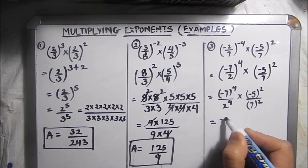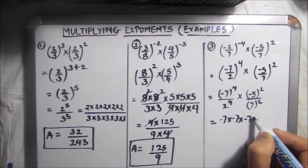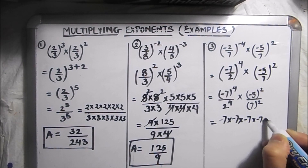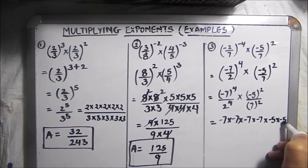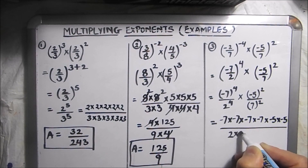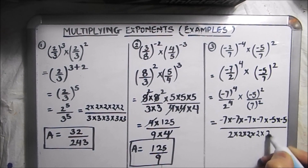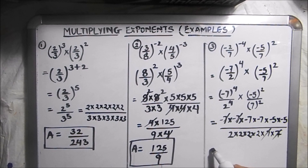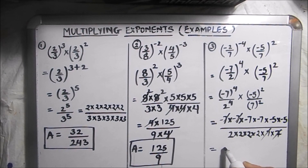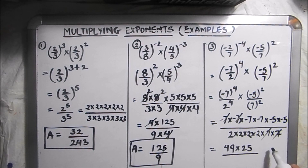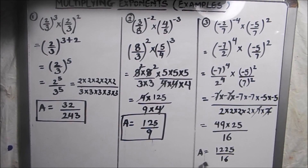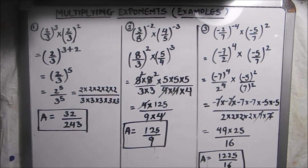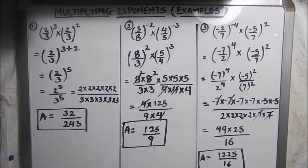So minus 7 times minus 7 times minus 7 times minus 7 and minus 5 times minus 5 over 2 times 2 times 2 times 2 and 7 times 7. The 7s cancel, giving us 49 times 25 over 2 to the power 4, which is 16. This gives us 1225 over 16. That is how we multiply numbers with exponents.